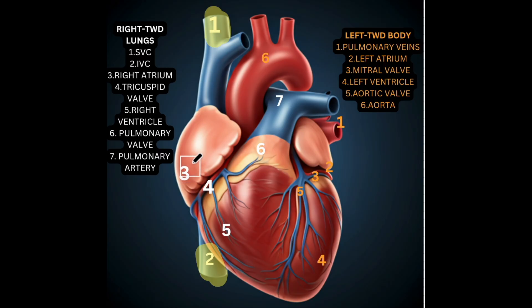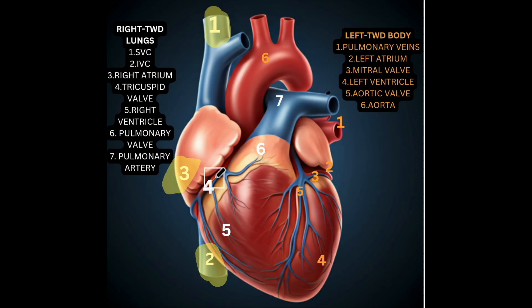There's a chamber behind here called the right atrium. The right atrium is where blood will go after it enters the superior and inferior vena cava. It'll then go through the tricuspid valve — the valve will prevent backflow of blood in the heart — into the right ventricle, which is a large chamber down here.